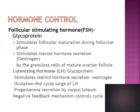FSH is secreted from the anterior pituitary. It is a glycoprotein and stimulates the ovary to secrete estrogen from the granulosa cells. Luteinizing hormone is also a glycoprotein secreted from the anterior pituitary; it causes estrogen secretion, is responsible for ovulation, and is responsible for the secretion of progesterone from the corpus luteum once ovulation happens. There is negative feedback of estrogen and progesterone on the anterior pituitary and hypothalamus.